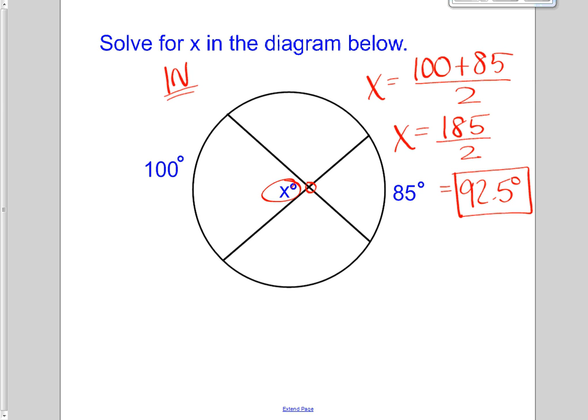That's your value for x right here. And of course, these are vertical angles. So this x, it's the same, right, on either side. That one would be 92.5 as well.